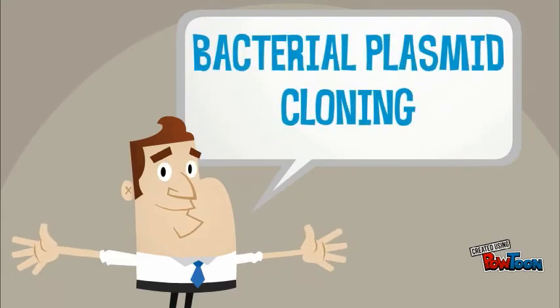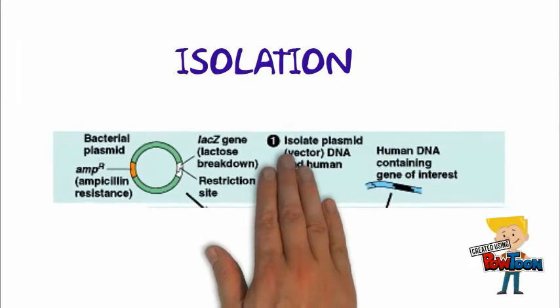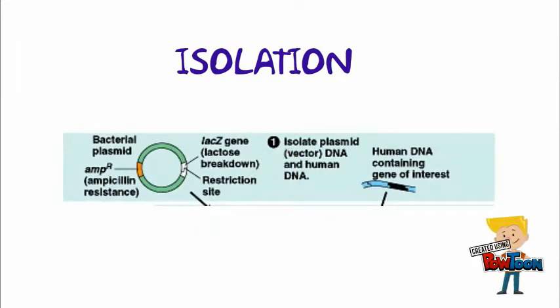Bacterial plasmid cloning begins with isolation. We isolate the DNA from the organism that contains the desired gene. Isolated DNA is purified and then fragmented with a restriction enzyme.